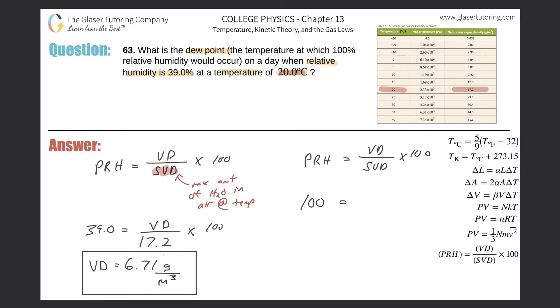The part that they didn't state in this problem but has to be the case is that whatever the vapor density is that you calculated in the first part will be the same as this vapor density in the second part. Basically we're just trying to find that given this vapor density, what's the dew point? That vapor density has stayed the same, 6.71.